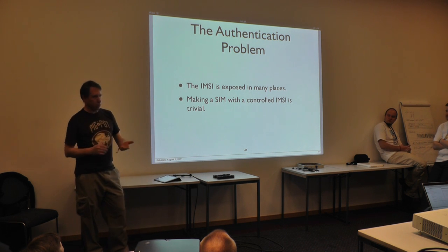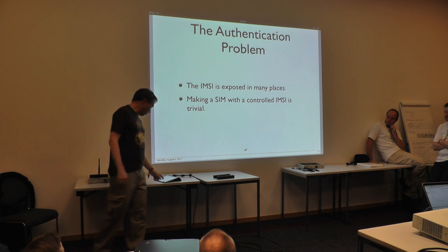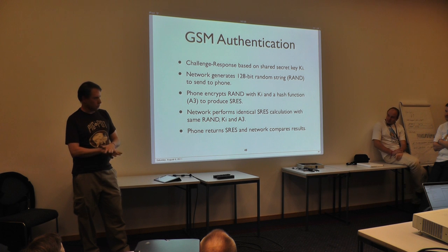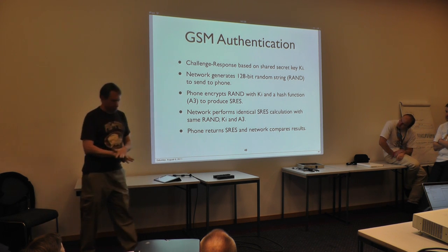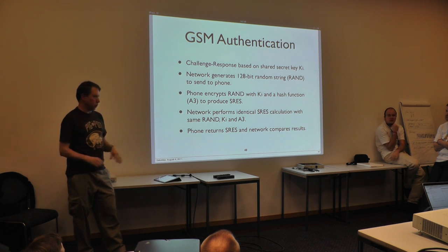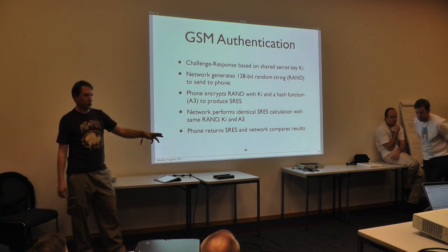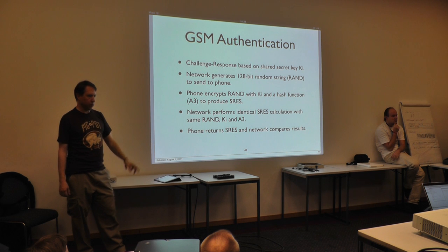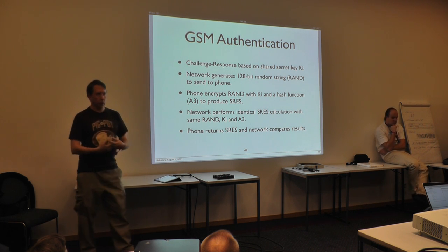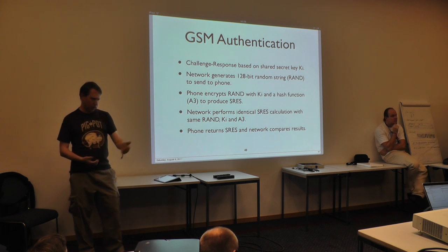Now we talk about how we do authentication in OpenBTS. It's trivial to produce a SIM with a cloned IMSI. What's in the SIM is the secret key called Ki — it's 128 bits long. Ki is only supposed to exist in two places: in the SIM and in the authentication center, which is part of the Home Location Register at your home carrier. You verify that the phone has the right Ki using challenge-response authentication. The network sends a nonce to the phone, the phone hashes the nonce with its Ki and sends back the result. The authentication center does the same calculation and the network compares them. Note that the network authenticates you, but you never authenticate the network — the network could just lie and say it's Vodafone.